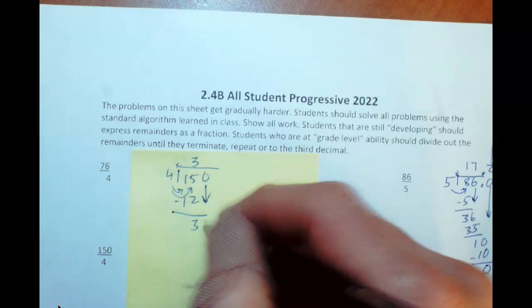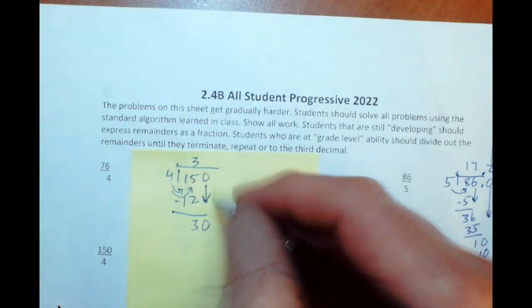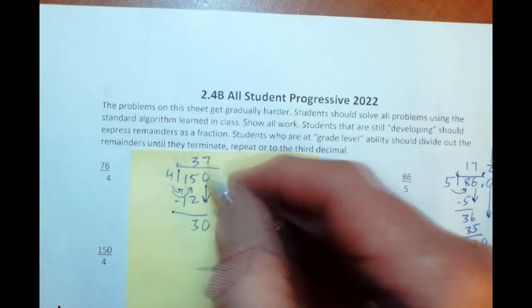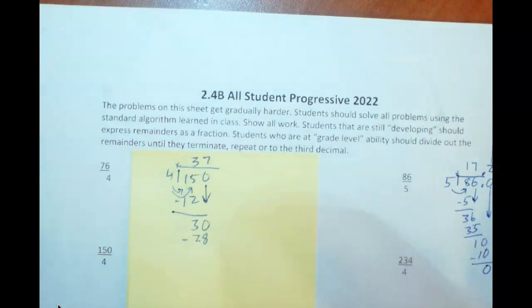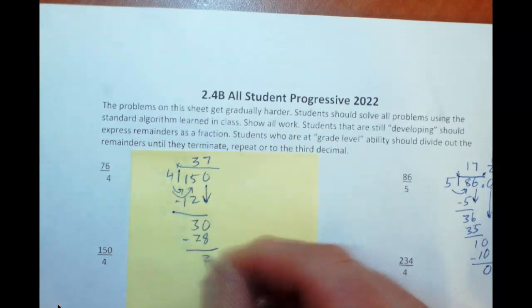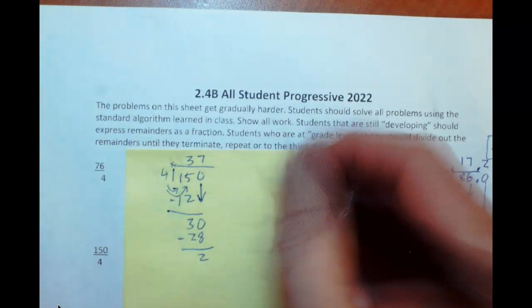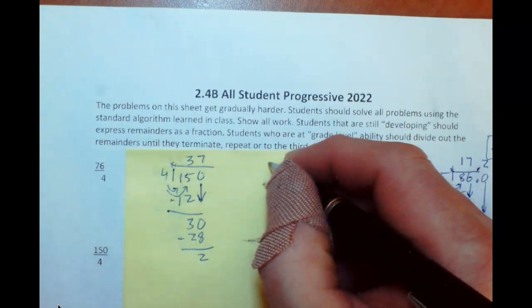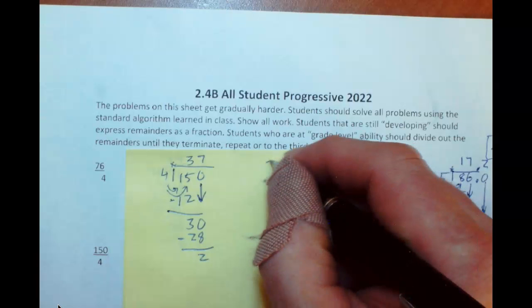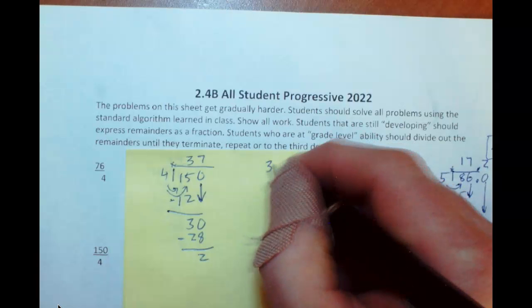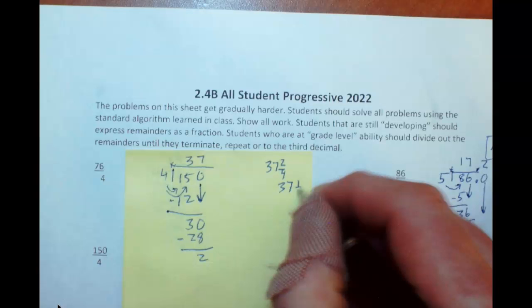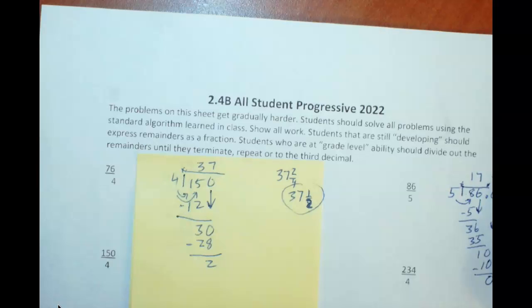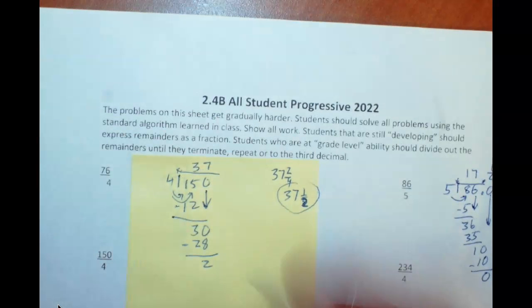So now we can bring down this 0. And how many times does 4 go into 30? Well, if we put it in there 7 times that would be 28, that's as close as we're going to get. So 7 times 4 is 28. Subtract it out, we have 2. Well, you could call this, if you're struggling with division a little bit, you could call this the answer is 37, we have 2 fourths, which we can really call 37 and 1 half.